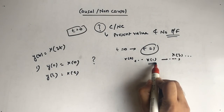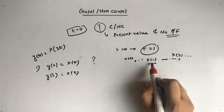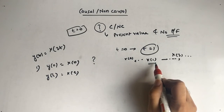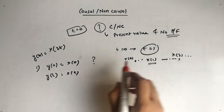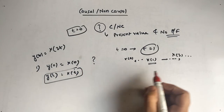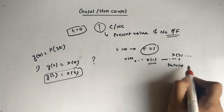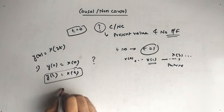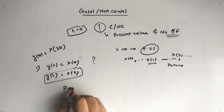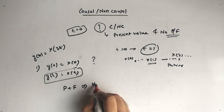We started at t equal to 1, so x(1) is the present. But now x is 2, which is in the future. This means it depends on present plus future. So present plus future is non-causal.